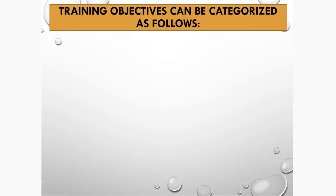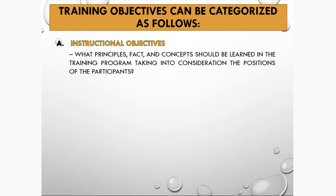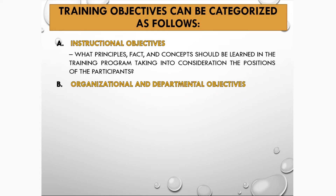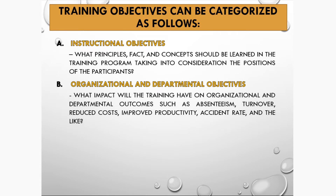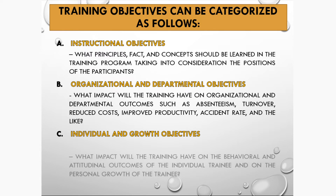Training objectives can be categorized as follows: instructional objectives — what principles, facts, and concepts should be learned in the training program, taking into consideration the positions of the participants; organizational and departmental objectives — what impact will the training have on outcomes such as absenteeism, turnover, reduced costs, improved productivity, and accident rate; and individual and growth objectives — what impact will the training have on the behavioral and attitudinal outcomes and personal growth of the individual trainee.